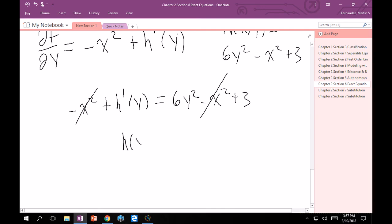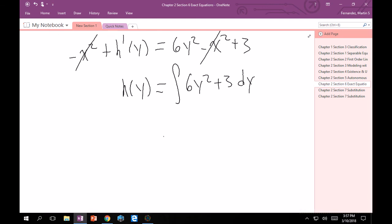So, now, h of y is going to equal to the integral of 6y squared plus 3 dy. Great. And then this integral isn't too bad to take. This is going to equal, let's see, that is 3y, no, that's 2, right? 6 divided by 3, not 6 divided by 2. So, that's 2y cubed plus 3y. And then don't worry about the c because we're going to set it equal to c at the end. So, this is fine for h of y.